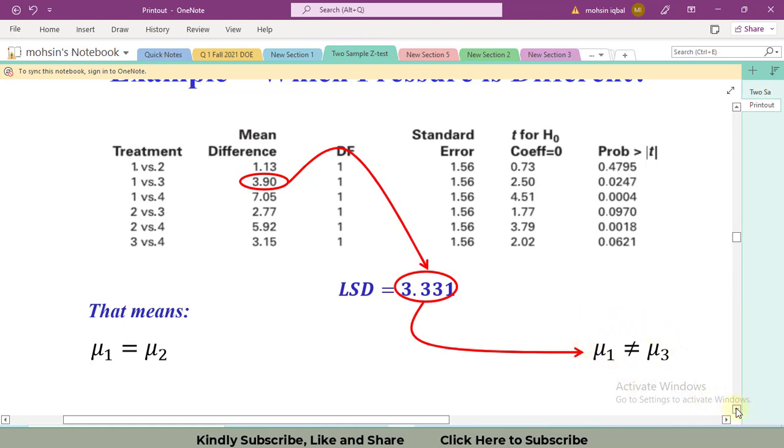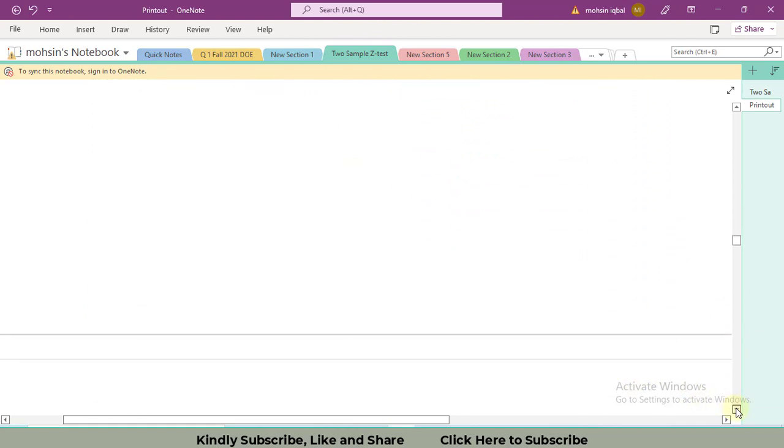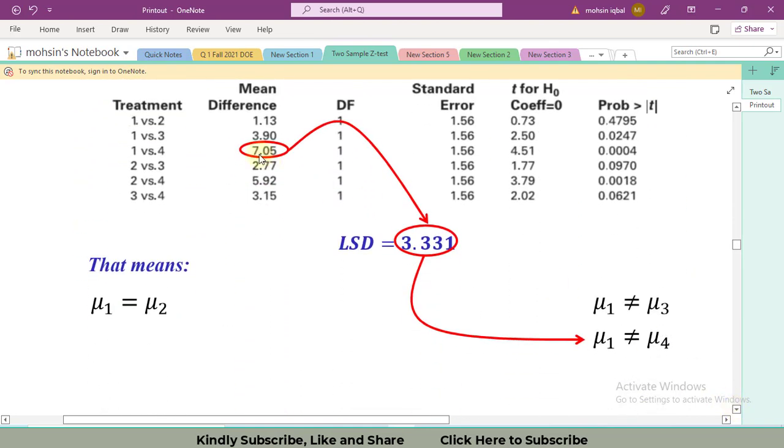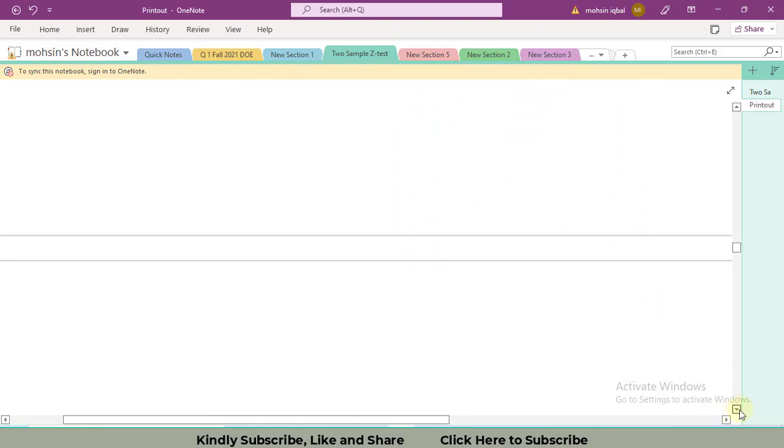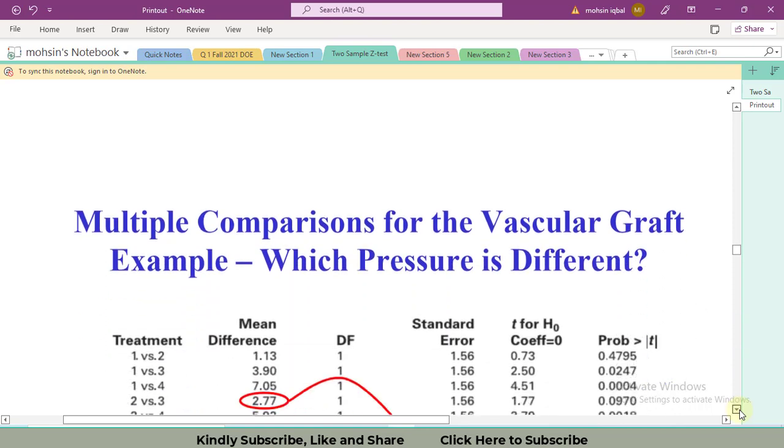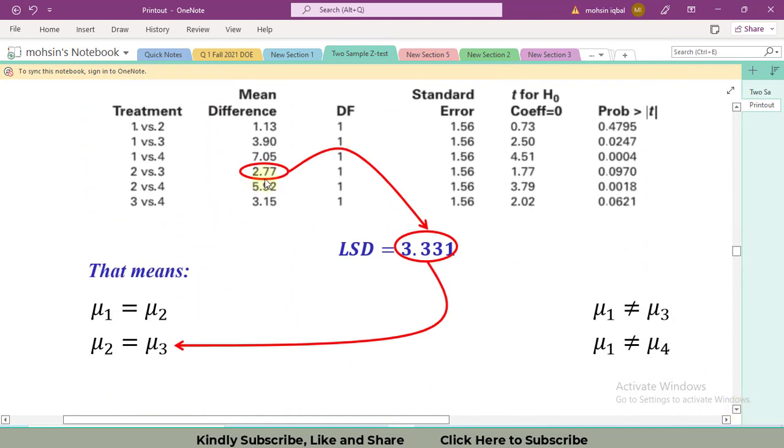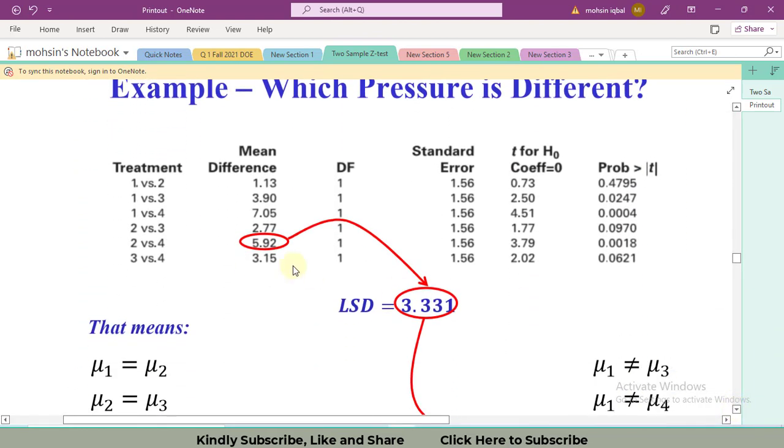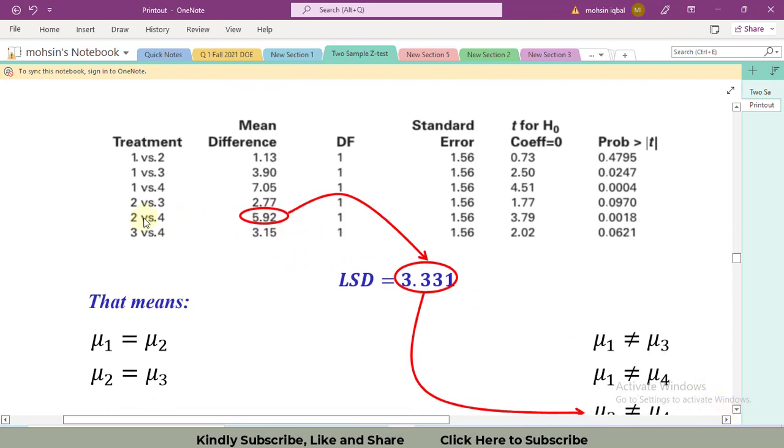If we go further, we can see that 7.05 is greater than 3.331, again mu1 is not equal to mu4. Likewise, we have to search for all possible combinations. 2.77 is less than LSD so they are equal. 5.92 is greater than 3.332, so 2 and 4 are not equal to each other.